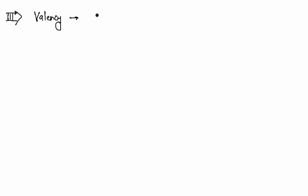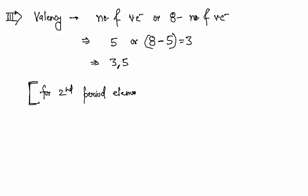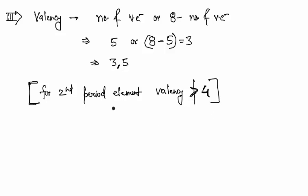The third part asks for valency. Valency equals the number of valence electrons, or 8 minus the number of valence electrons. Phosphorus has 5 valence electrons, so valency is either 5 or 8 minus 5, which is 3. So the valency of phosphorus is 3 and 5. Note: for second-period elements, valency cannot be greater than 4.